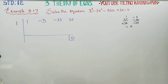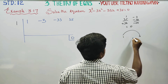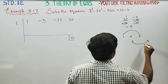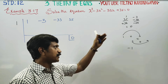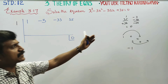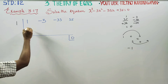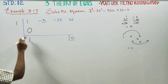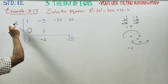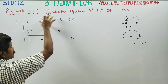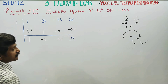We start the synthetic division with 1. Bring down the first coefficient: 1. Multiply 1×1=1; add to -3 to get -2. Multiply 1×(-2)=-2; add to -33 to get -35. Multiply 1×(-35)=-35; add to +35 to get 0. The remainder is 0.